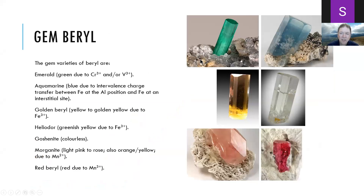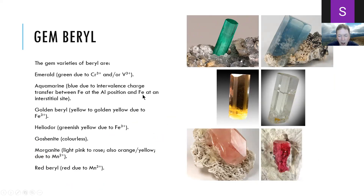When we talk about gem varieties of beryl, the most important is emerald, which gets its green color from chromium and/or vanadium replacing those octahedral sites. We also get aquamarine, which is blue because of iron replacing aluminum at the aluminum site and also in that interstitial site. An electron hops back and forth between those two sites, leading to the blue color — this was only determined about 10 years ago.